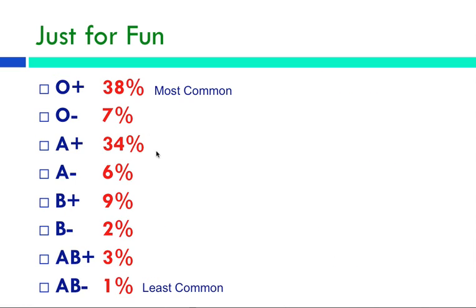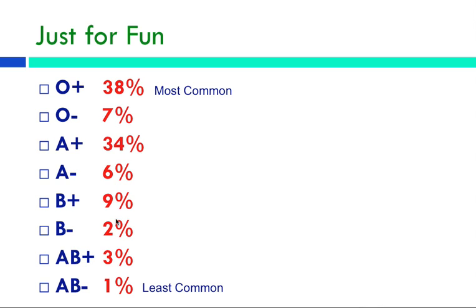Just for fun, O positive blood type is the most common. The least common is AB negative blood type. But people that are AB negative, good news for them, they can receive blood from anybody else that has negative blood type.